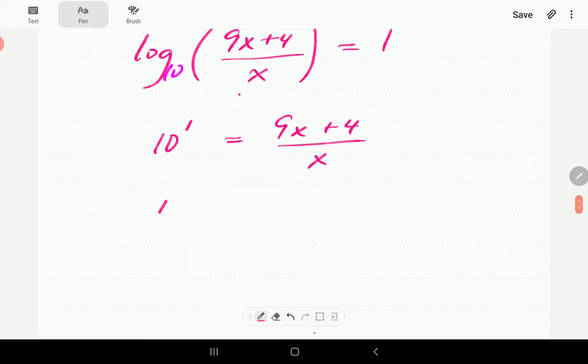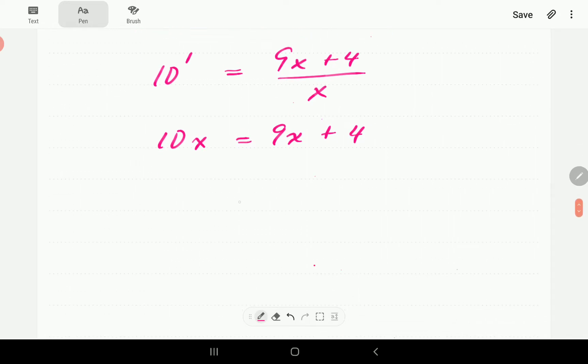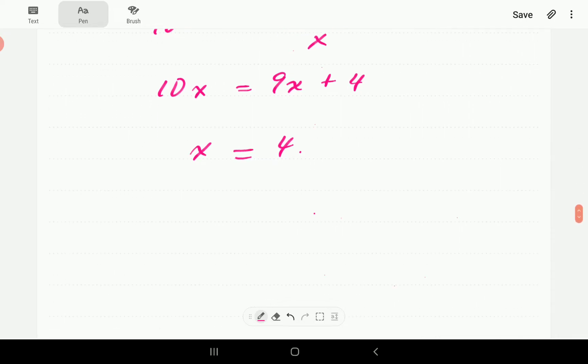Then if we bring the x to the left-hand side, this is saying 10x is equal to 9x plus 4. Bring the 9x to the left-hand side, 10x minus 9x is just x. So this one is giving us x is equal to 4.